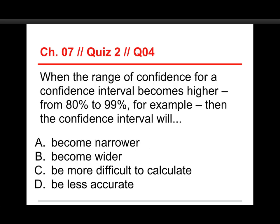When the range of confidence for a confidence interval becomes higher, from 80 to 99% for example, then the confidence interval will, A, become narrower, B, become wider, C, be more difficult to calculate, or D, be less accurate.